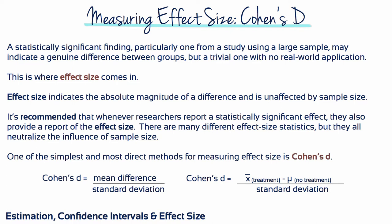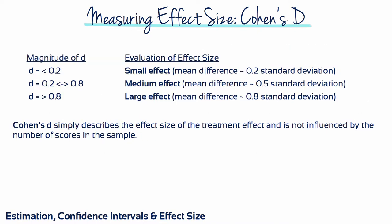One of the simplest and most direct methods for measuring effect size is called Cohen's D. It's named after Jacob Cohen, who was an American statistician and psychologist at NYU, who proposed this method for measuring effect size. Cohen's D equals the difference between the sample mean and the population mean divided by the standard deviation. Cohen proposed these rules of thumb for interpreting effect size. However, Cohen also warned that they may be different for each field of study.